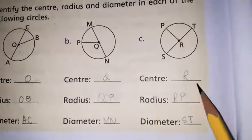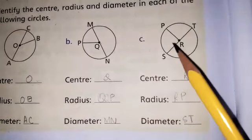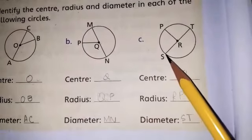C: Center is R. Radius is RP and diameter is ST.